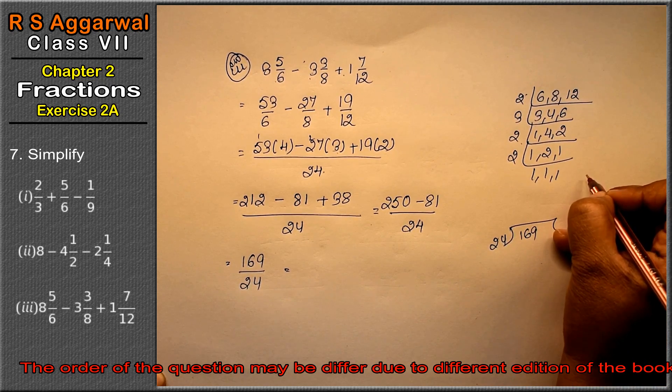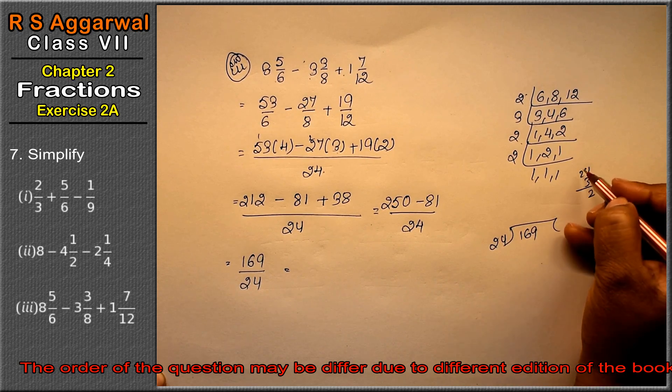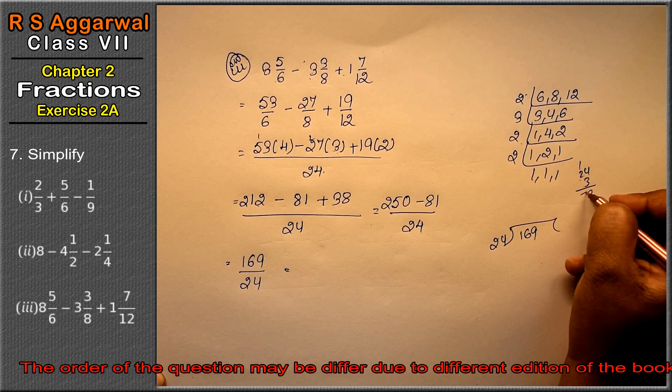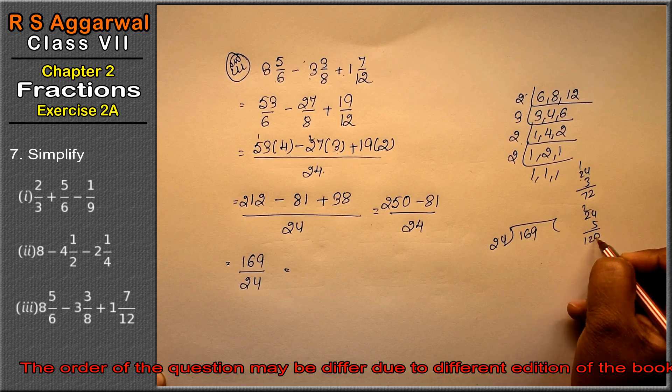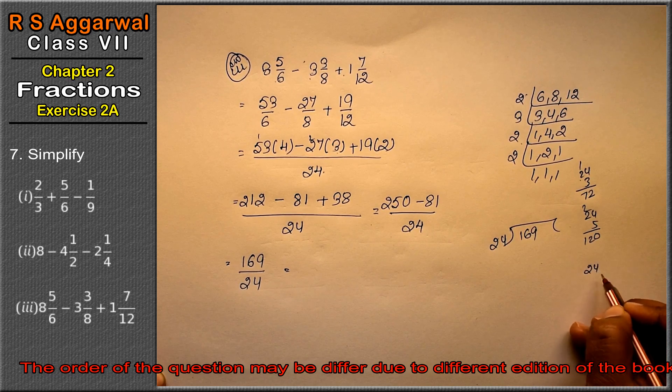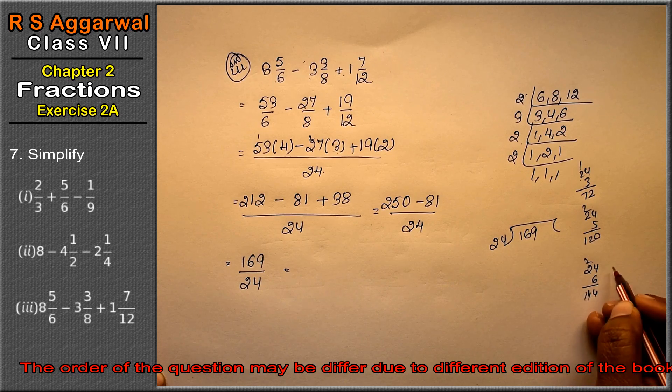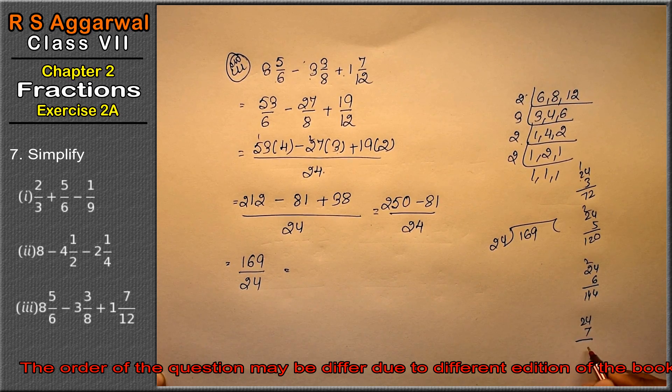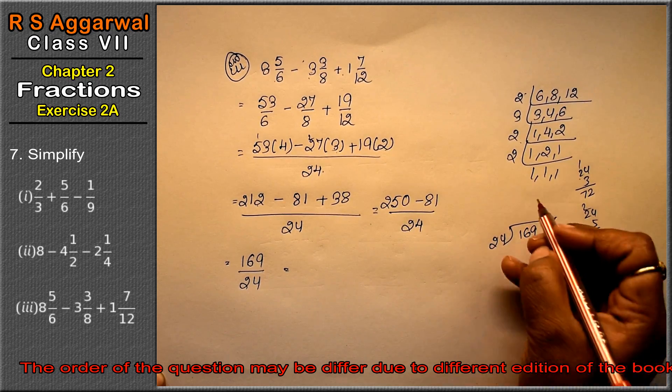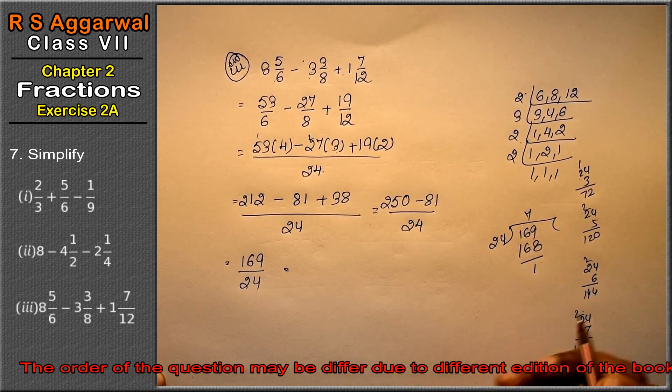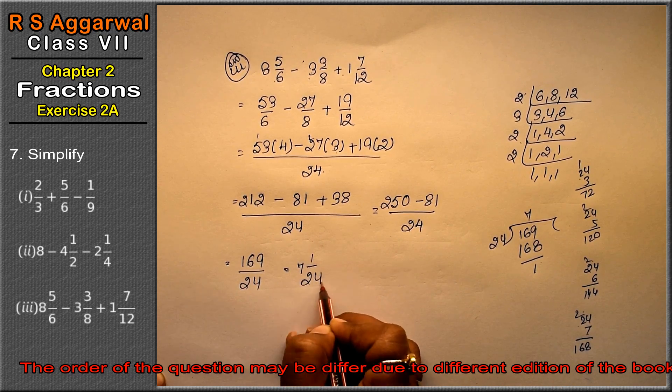169 upon 24. 24, 1 is 24, 48, 72, 96, 120, 144, 168, 1 bacha. So 7 whole 1 upon 24 is the answer.